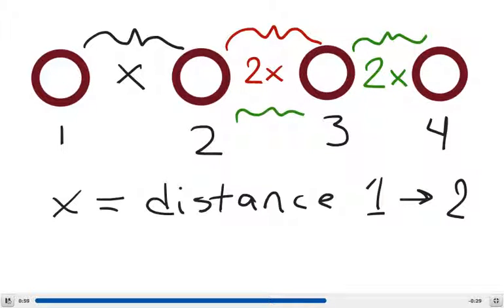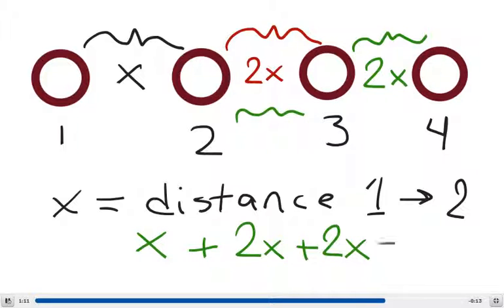So by drawing this diagram and labeling all the parts I can see that the sum of the distances would be the first distance plus the second distance plus the third distance, and we're told that the total distance is 35.